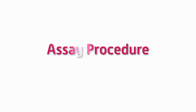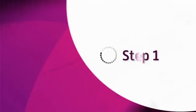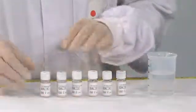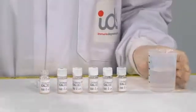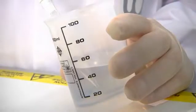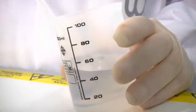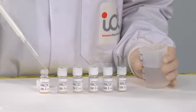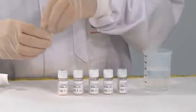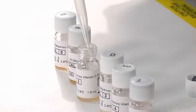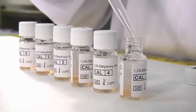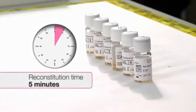Assay procedure. Step 1: Reconstitute calibrators immediately before use. Add 1 ml of distilled or deionized water to each vial and replace lids. Wait for 5 minutes to ensure calibrators are fully reconstituted.